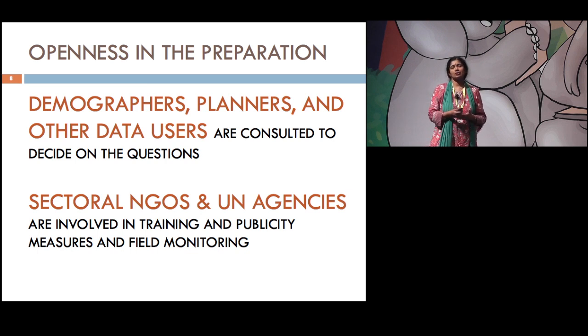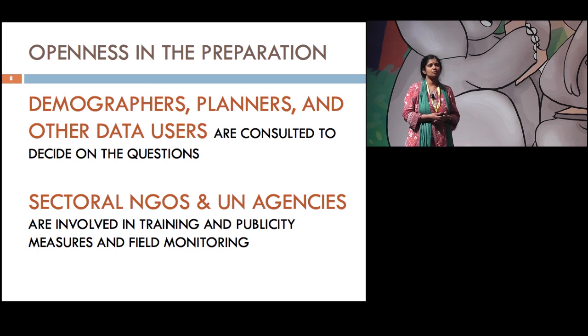About three or four years before the census starts, we start asking data users, we start asking demographers, planners, what are the questions they want us to ask? What is the kind of data they want us to give them? Without that, we don't finalize the questions. And secondly, in the entire training process of the enumerators, the publicity we do to reach out to the respondents, and the field monitoring we do to make sure that the work is going on properly, we always involve the sectoral NGOs. NGOs dealing with the houseless people, NGOs dealing with gender, NGOs dealing with persons with disability. They are all part of our census process.